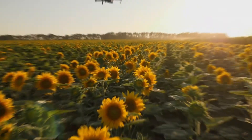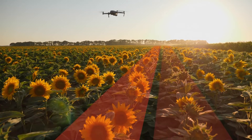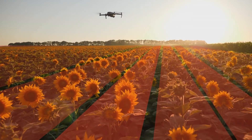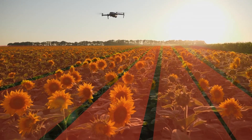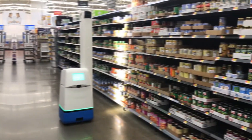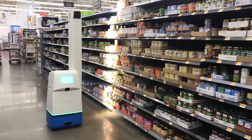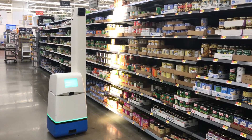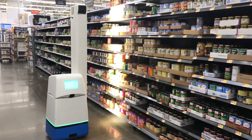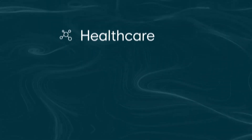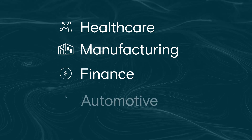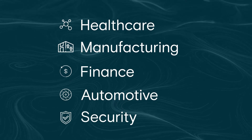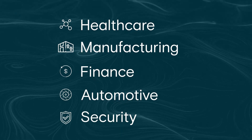In agriculture, drone imaging helps differentiate weeds from crops for pesticide use. In retail, robots scan shelves to determine which items are low stock. Image annotation is also used in healthcare, manufacturing, and more.